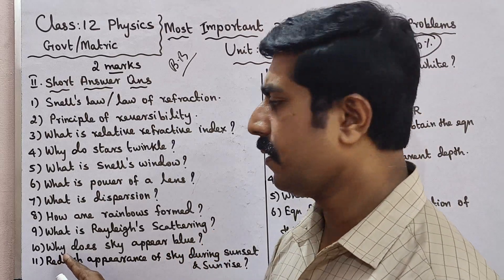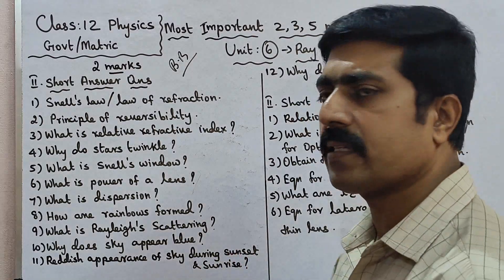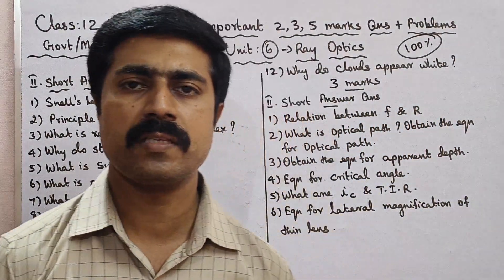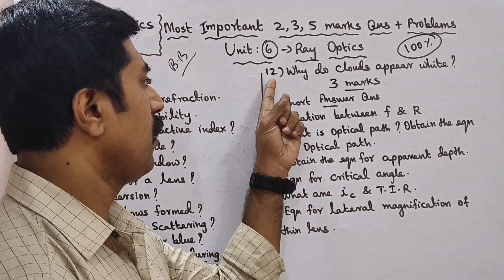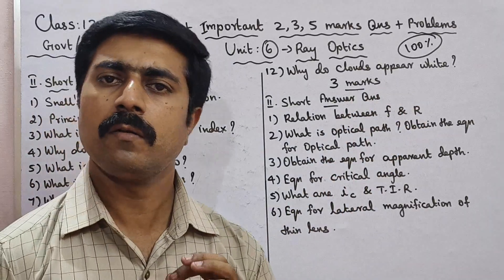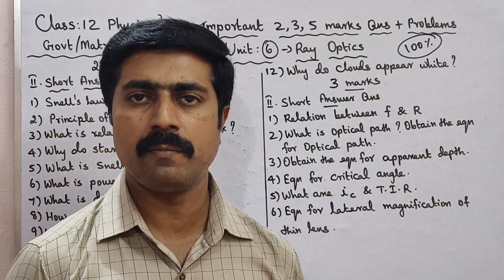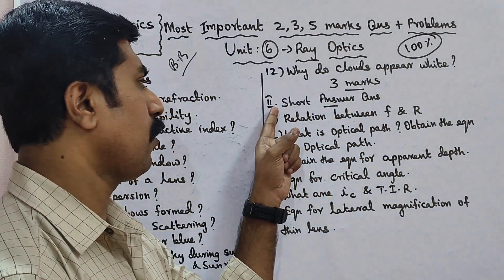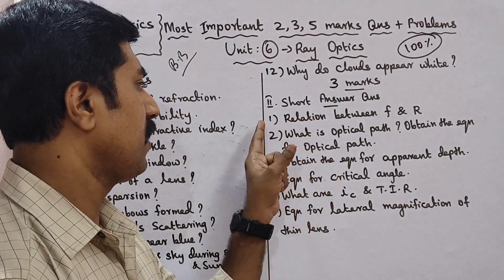Question number 10 — Why does the sky appear blue? Question number 11 — Reddish appearance of the sky during sunset and sunrise. Question number 12 — Why do clouds appear white? These 12 questions are the most important 2-mark questions to prepare.